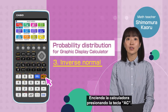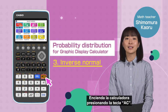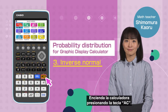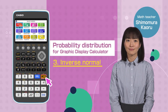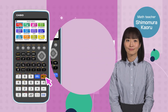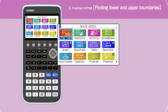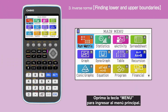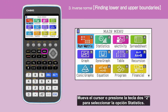Switch on your calculator by pressing the AC button. Press the menu key to open the main menu, then move the cursor or press the number to select the Statistics function.